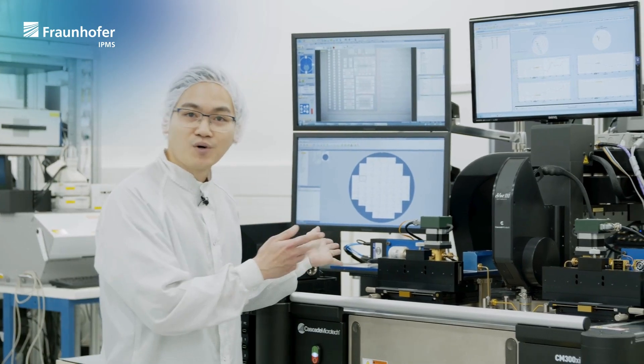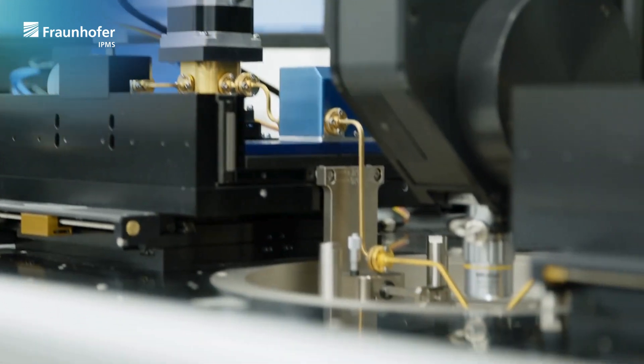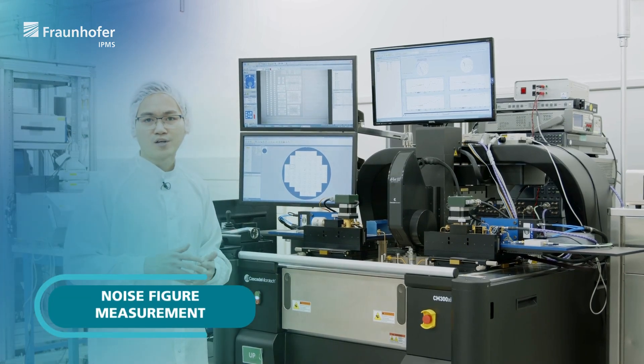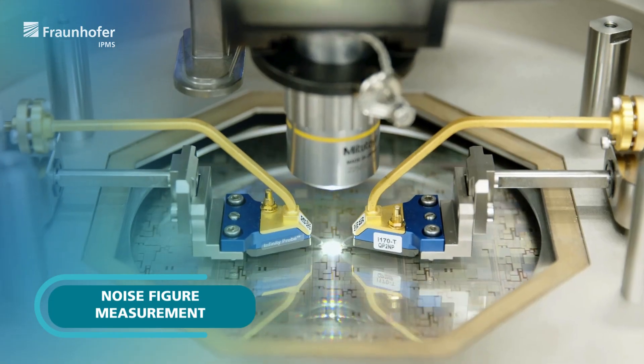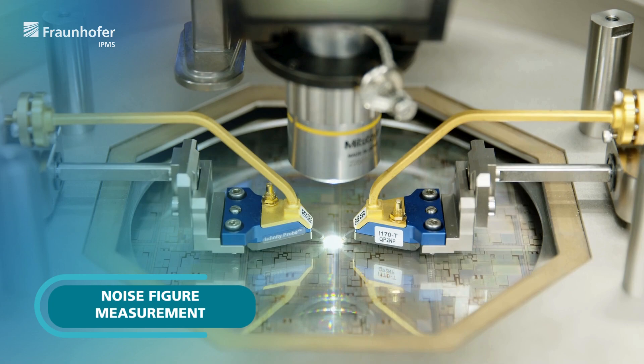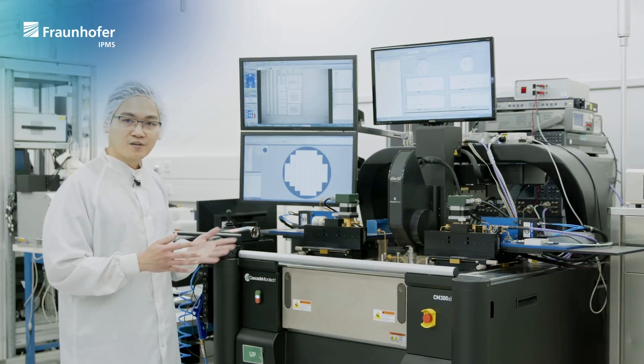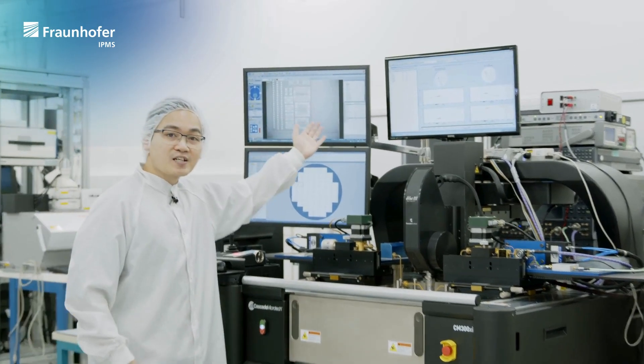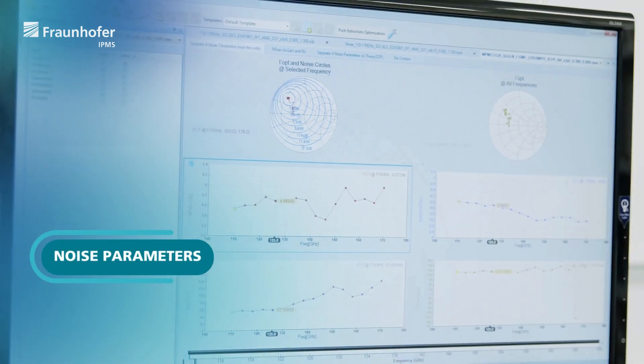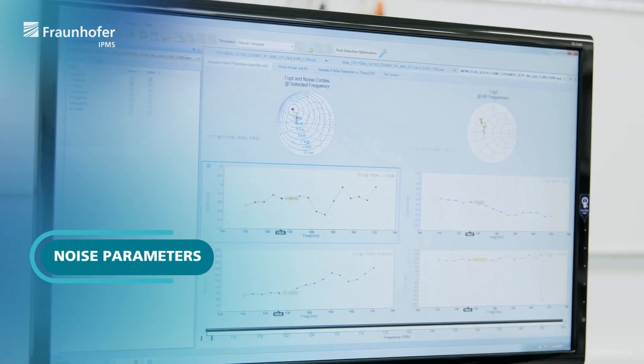The setup here is modularly designed and can house various tuner-based configurations. For example, we can provide a noise figure measurement covering a very wide frequency range from 1 to 170 GHz. Particularly, we can extract the full set of noise parameters consistently over various bands using the source-pull technique.